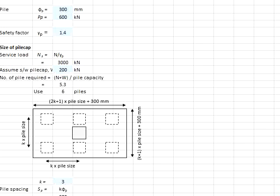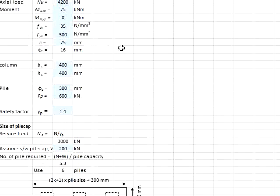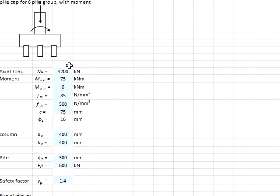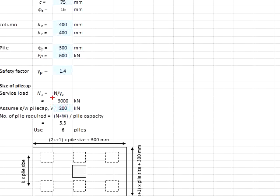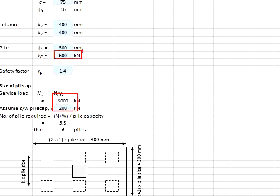You need to estimate the number of piles. To do that, you need to determine the serviceability loads. The axial load given is in terms of the ultimate limit state, so you divide by the factor of safety: 4200 kN ÷ 1.4 = 3000 kN. Assuming the self-weight of the pile cap is 200 kN, the total axial load is 3200 kN. Dividing by the pile capacity of 600 kN gives 5.3 piles, so use 6 piles.